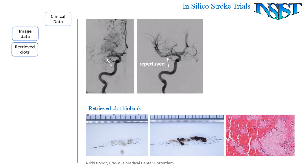So how does an in silico stroke trial work? First of all, we build our platform on extensive data: clinical data, images of thousands of stroke patients, and a large collection of retrieved clots form our base for modelling.